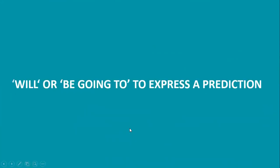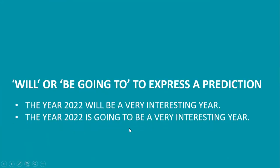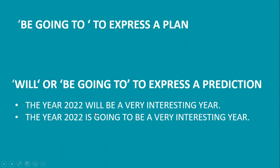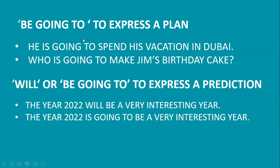You can use 'will' or 'be going to' to express a prediction. For example: 'The year 2022 will be a very interesting year' or 'The year 2022 is going to be a very interesting year.' To express a plan, use 'be going to': 'He's going to spend his vacation in Dubai.' 'Who's going to make Jim's birthday cake?' 'Be going to' expresses an intended action — something planned in advance.